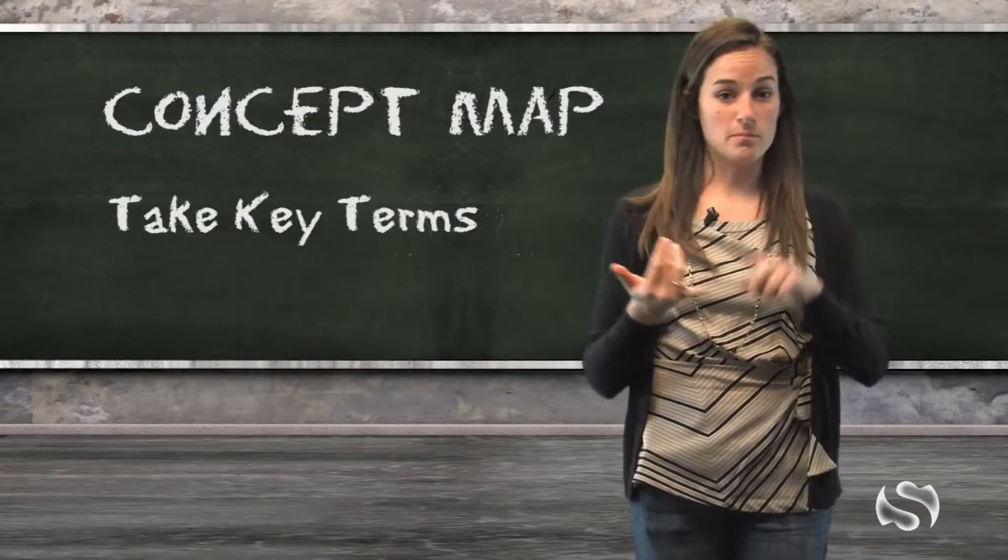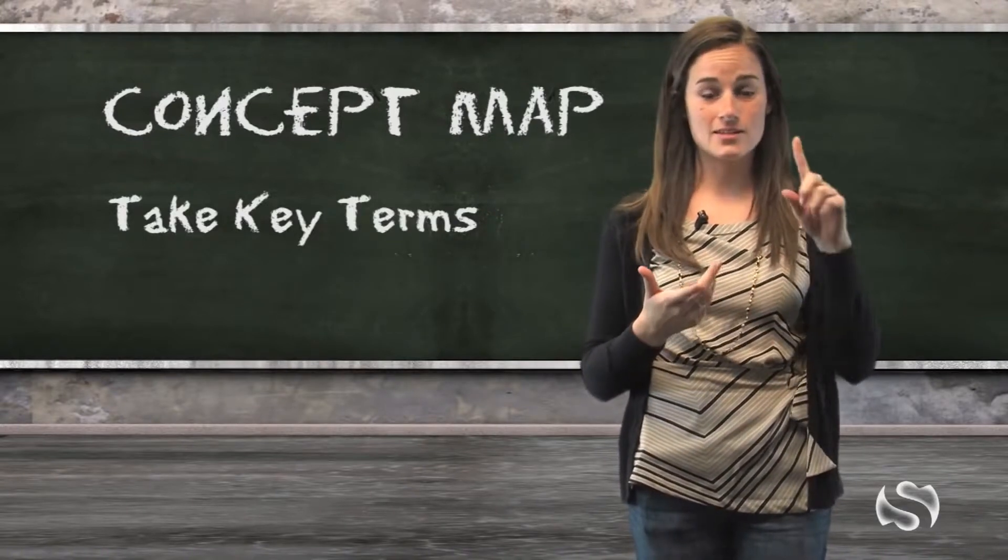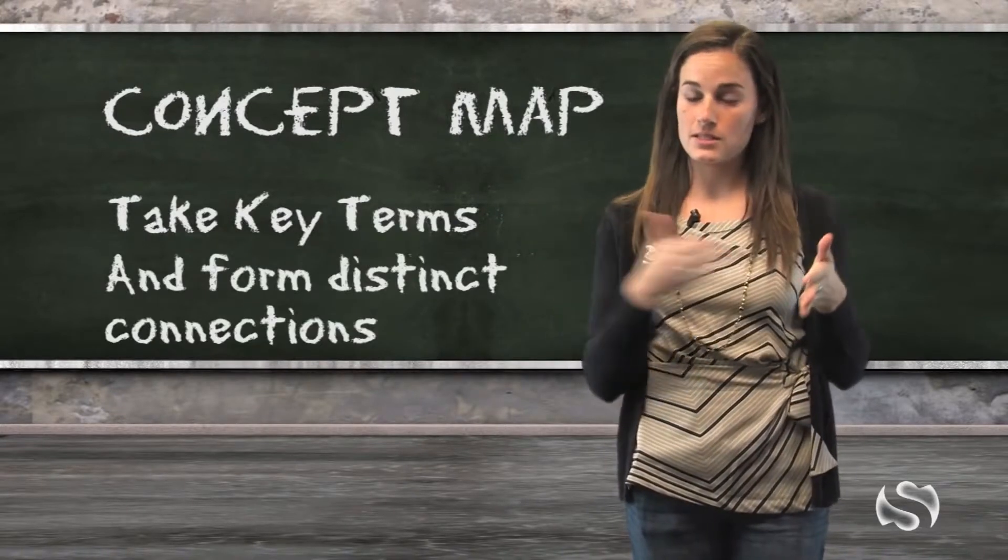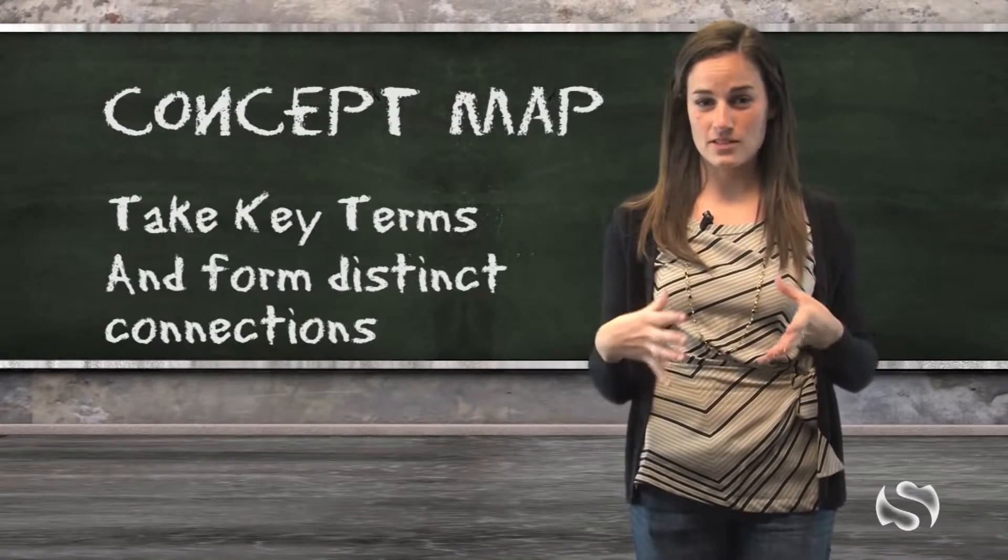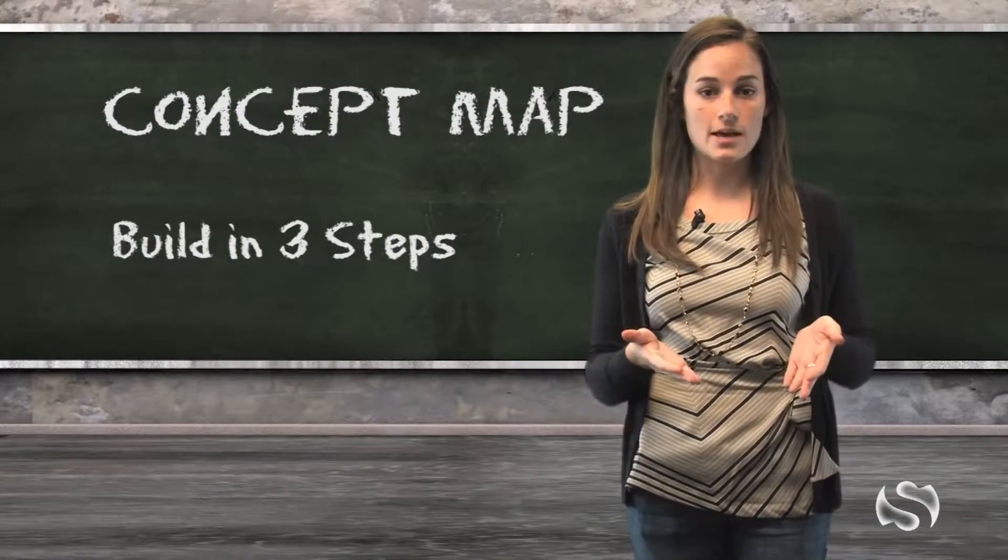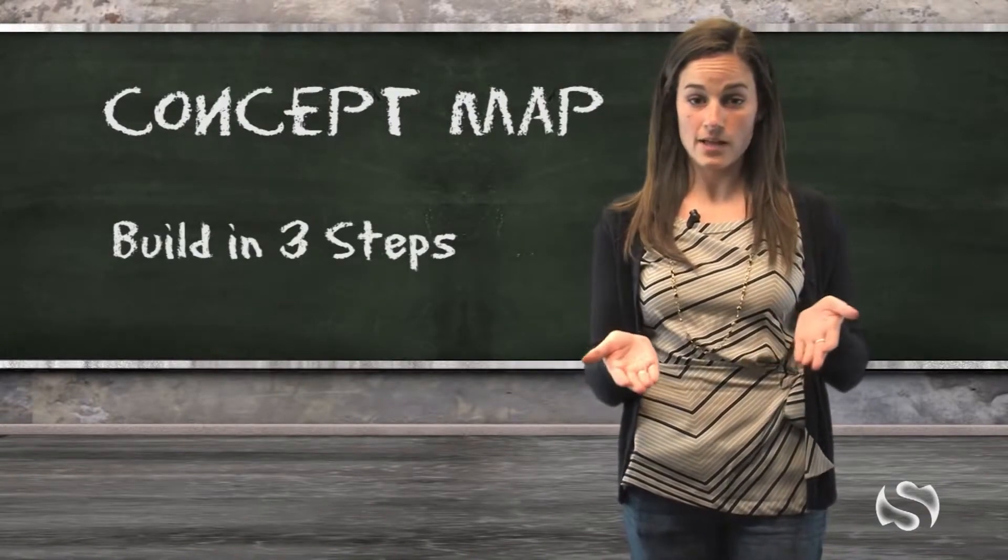So you're taking all the important people, terms, events, places, and you're forming these distinct connections between them so that you have a really cohesive understanding of the content. So I'm going to give you three steps in order to be able to build a concept map.